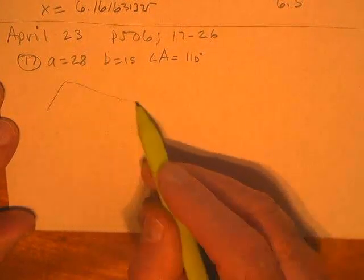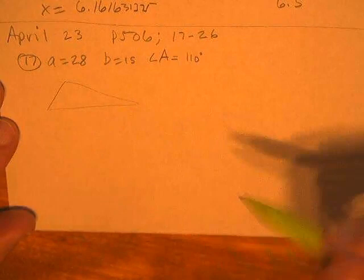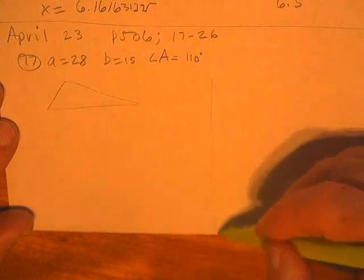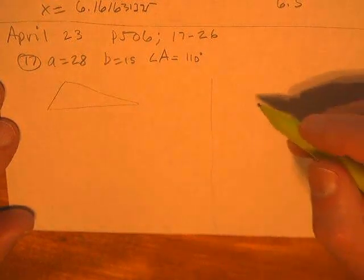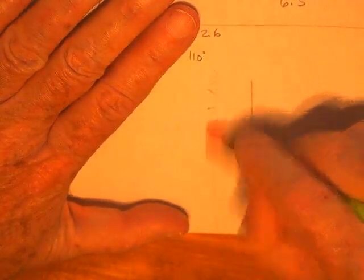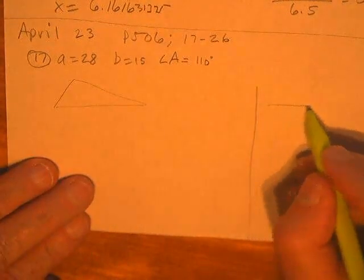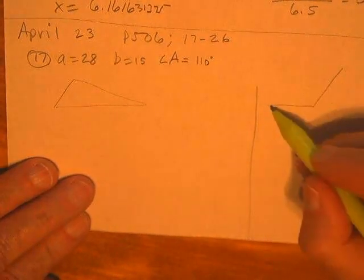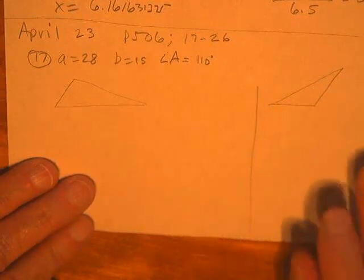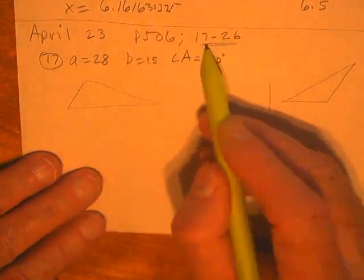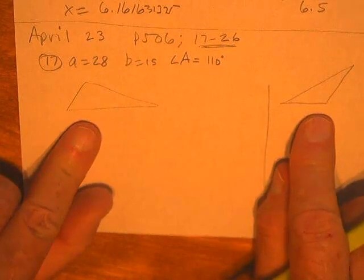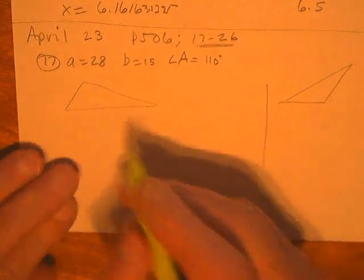Because it's always going to be possible that I have two triangles. Okay, so let's draw that one. Maybe I won't need as much room over here if there's two. And then let's draw the obtuse one.